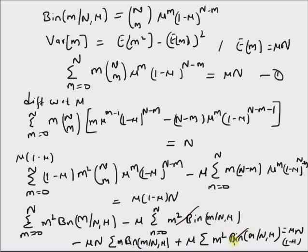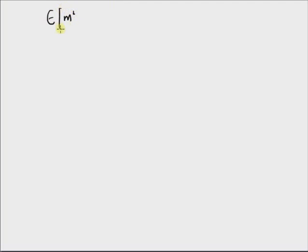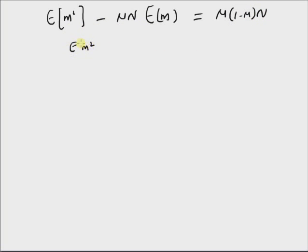We can clearly see that two terms cancel. The first surviving term is the definition of expected value of m squared, and the second surviving term is minus mu n times the mean value, which is again mu times n. So we have expected value of m squared minus mu n multiplied by expected value of m, equal to mu times 1 minus mu times n. Rewriting, this is expected value of m squared minus expected value of m whole squared, equal to mu times 1 minus mu times n.